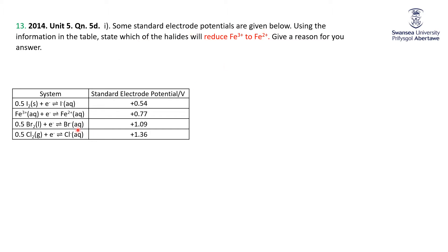Here are some standard electrode potentials. Notice that these are all half equations — something reacting with an electron, or gaining an electron — so there's a reduction to give a product, but no corresponding oxidation. These are only reduction half equations. Note that all of them have positive reduction potentials, meaning iodine, Fe3+, bromine, and chlorine would all like to be reduced.